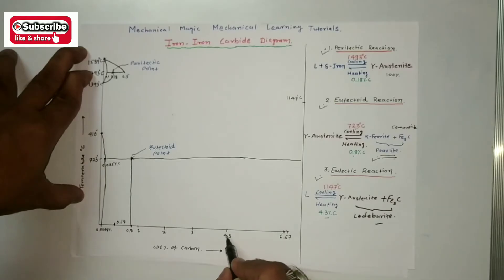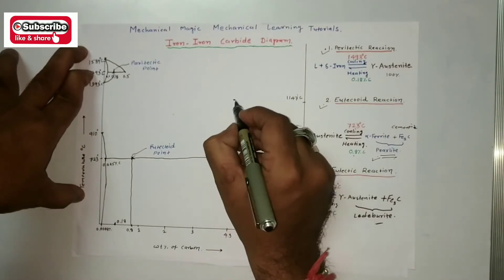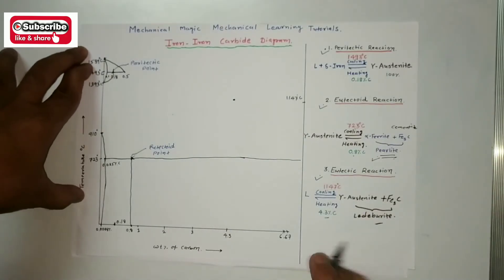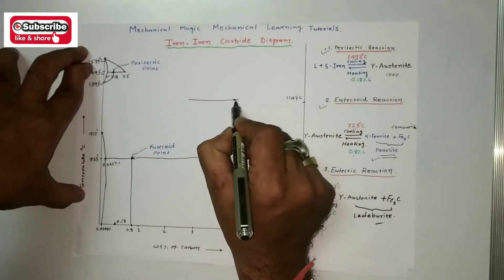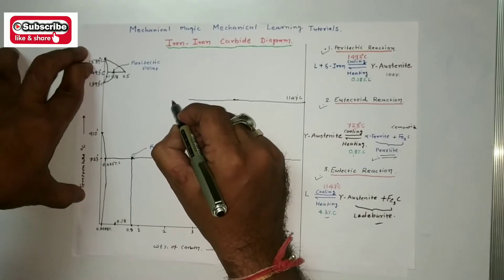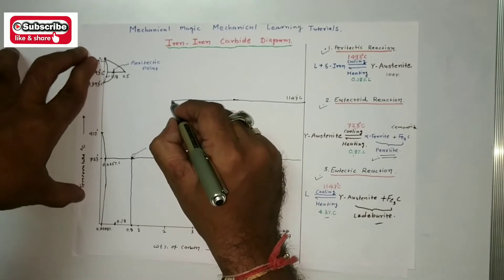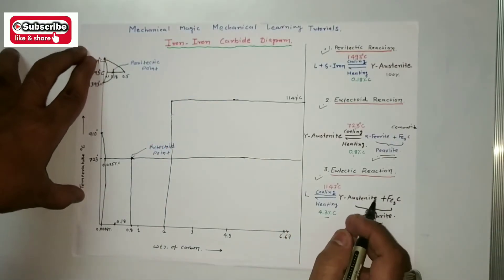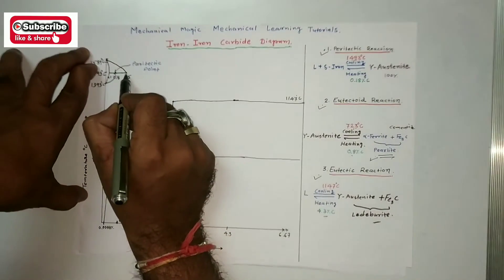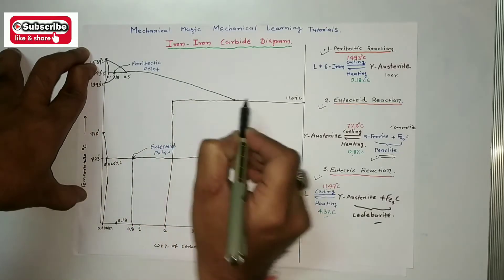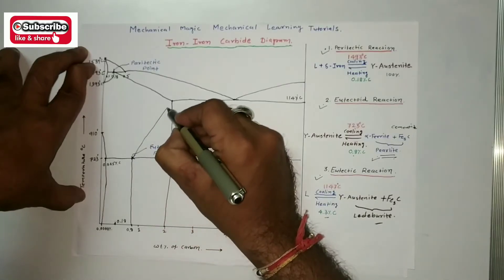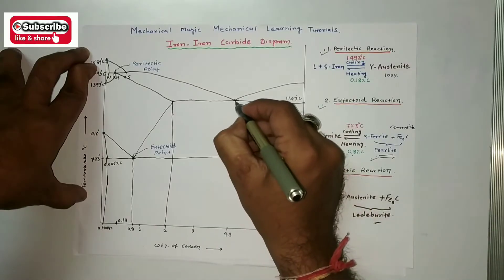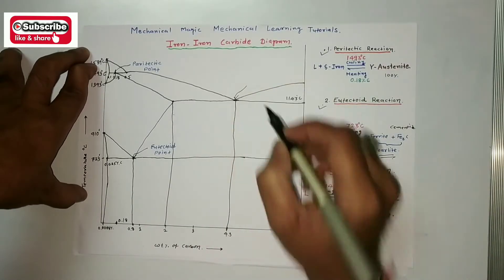The third point is the eutectic reaction point at 4.3 percentage of carbon and 1147 degrees centigrade — this represents the eutectic point. Drawing one horizontal line from this side up to 2 percentage carbon, which is the boundary of the steel category. Now joining all these lines and marking the eutectic point.